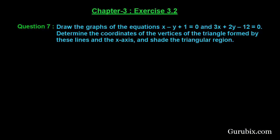Welcome friends. Let us solve question number 7 of exercise 3.2 of chapter 3. The question says: draw the graphs of the equations x minus y plus 1 equals to 0 and 3x plus 2y minus 12 equals to 0. Determine the coordinates of the vertices of the triangle formed by these lines and the x-axis, and shade the triangular region.